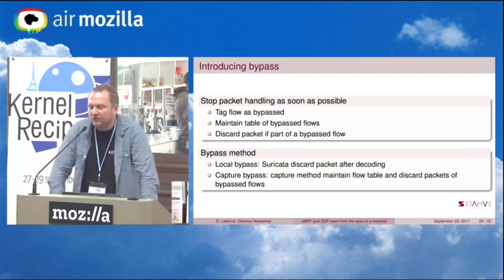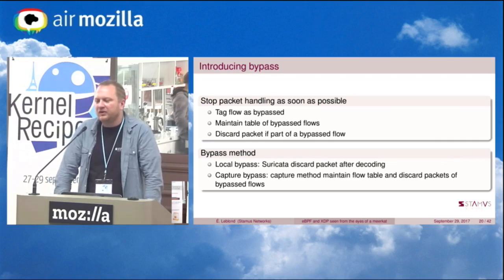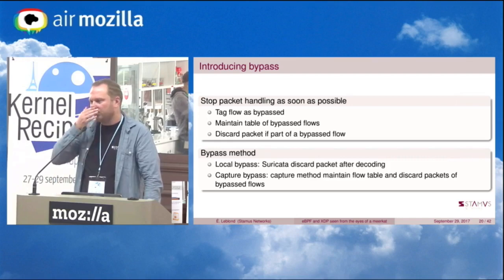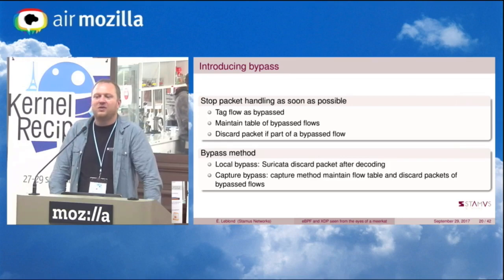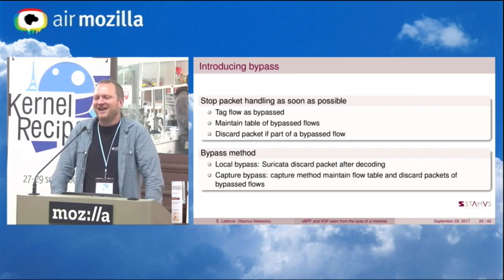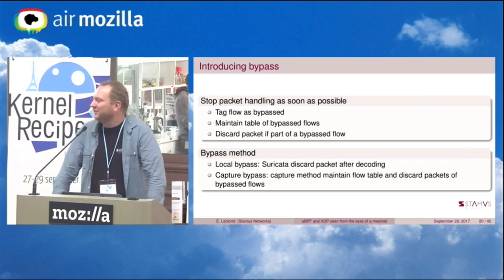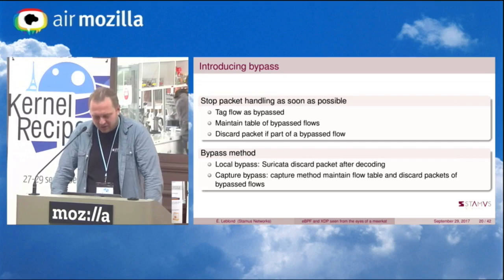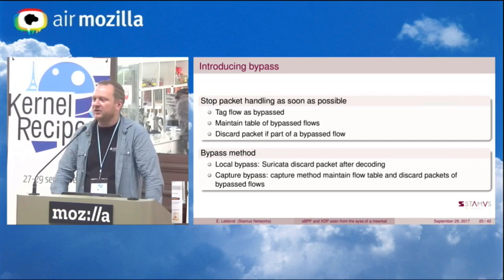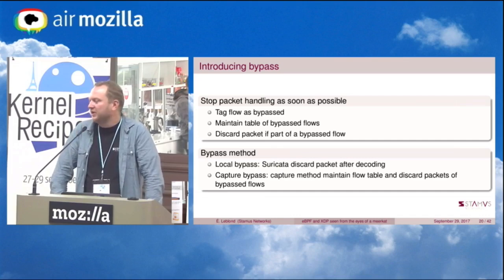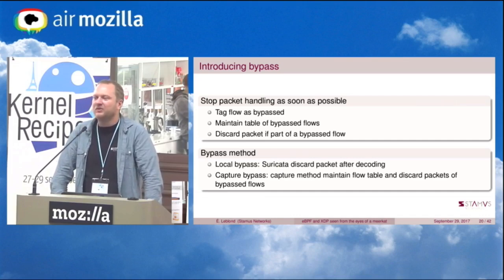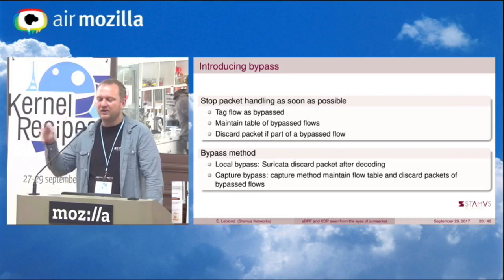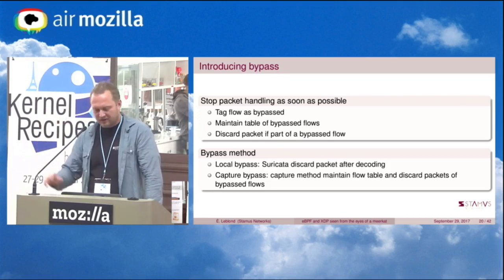A common method to avoid this is to say: if I see a big flow, I know it's big, so I can just have a counter on this side to bypass this flow — just say I don't want to see it anymore. There is one easy bypass method: when the packet reaches Suricata, we say this is part of a big flow, so we do basic decoding with no complex handling, and then say 'bypass'. That's the local bypass.